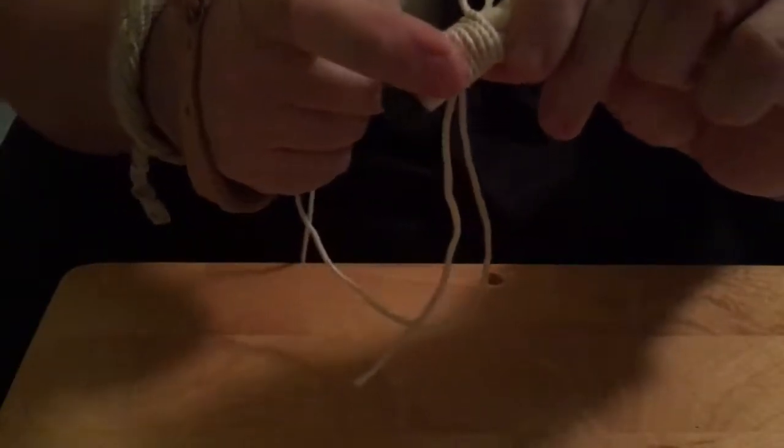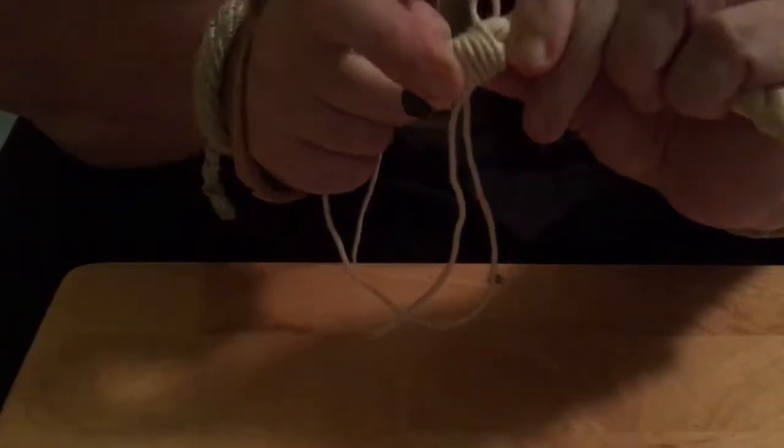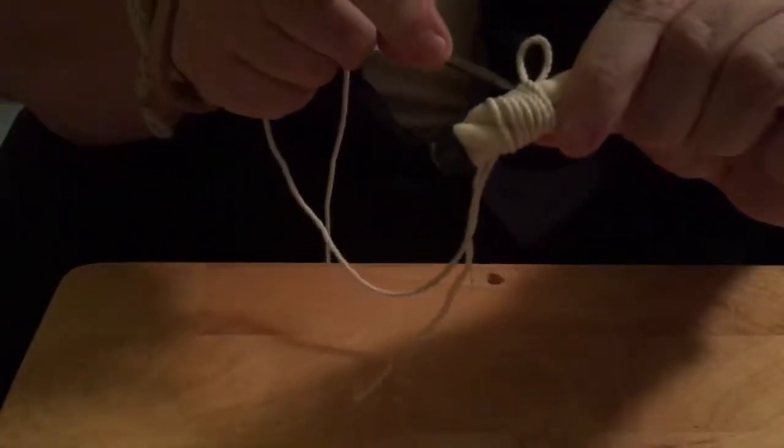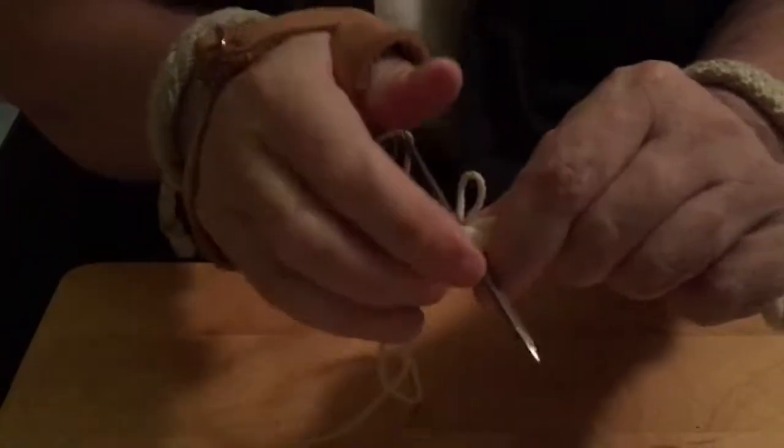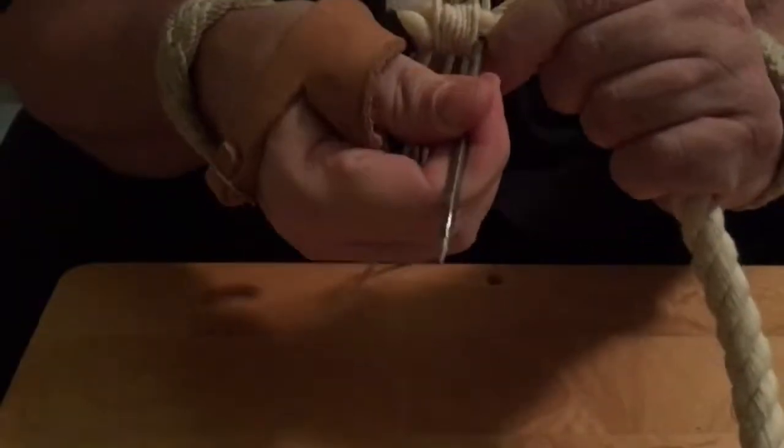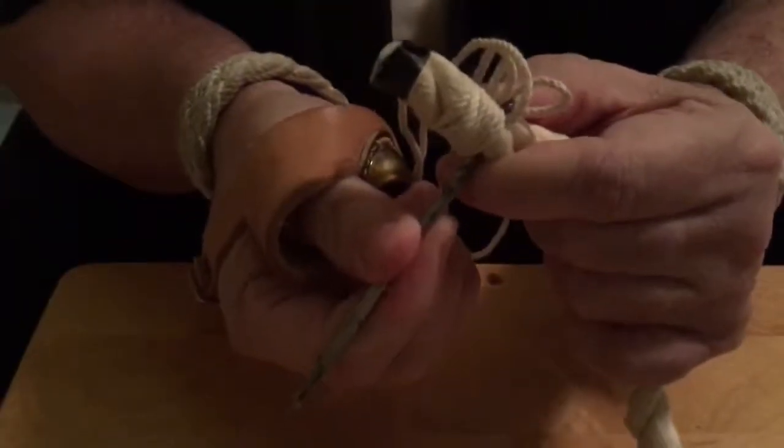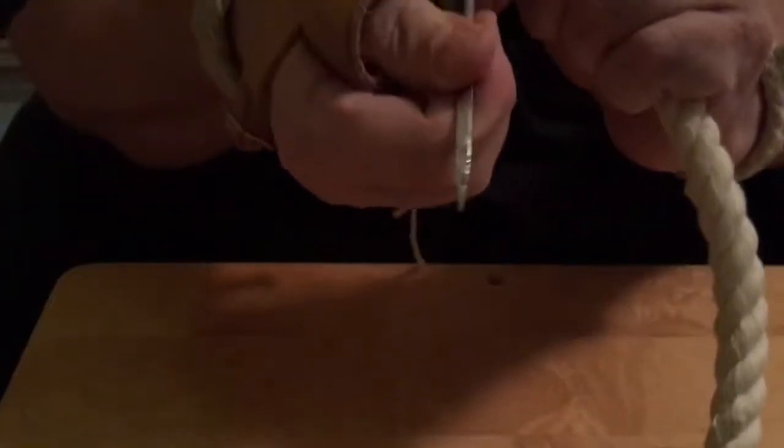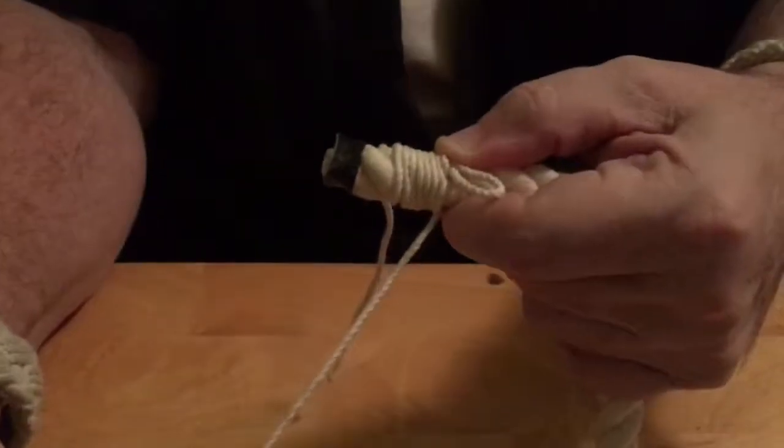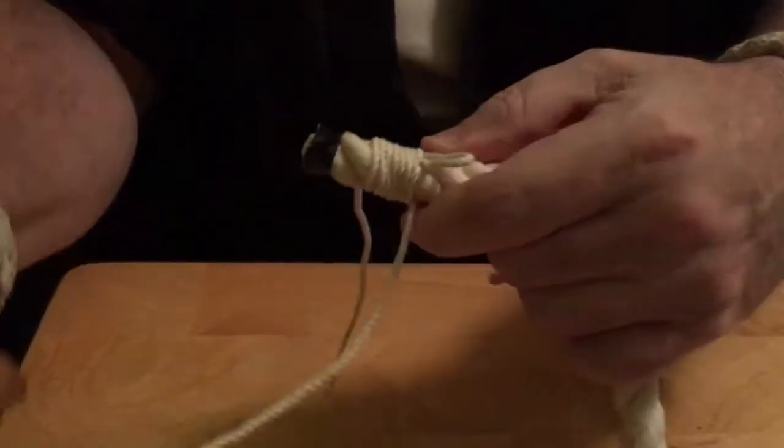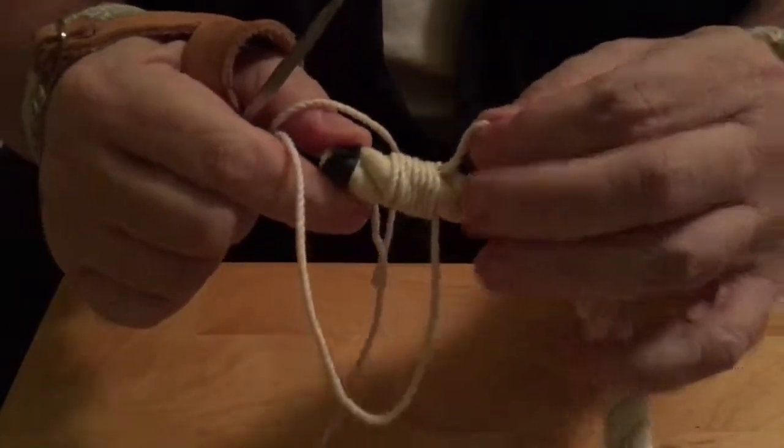You're gonna push your needle through so it comes out those two strands. Gigantic needle is a little hard to work with, but still keeping your thumb holding all the wraps together, pull your line through and that'll lock your loops and your wraps into place. Then you can let go.